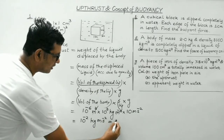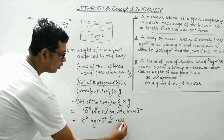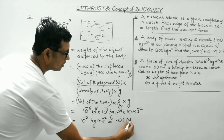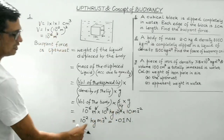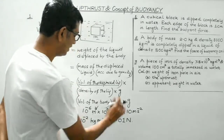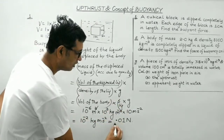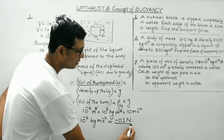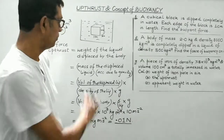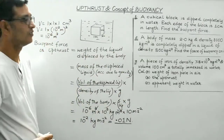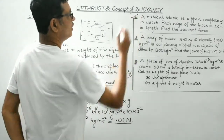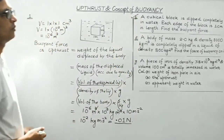So 10⁻² Newton is the answer, and kg·m/s² is Newton. This is the up thrust or buoyant force. We are done with question number 1.